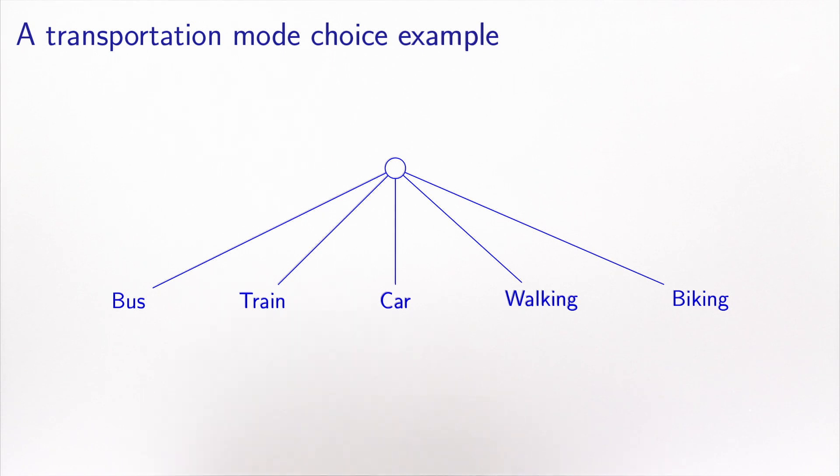Consider again a transportation mode choice problem. Here I have five alternatives: bus, train, car, walking and biking. In the picture here, I have somehow assumed that I will use a logit model to model this choice.